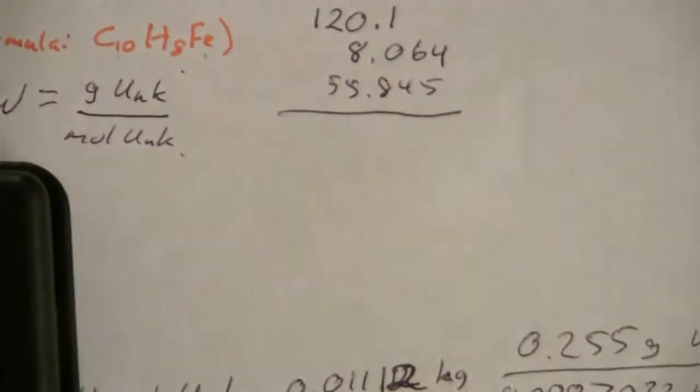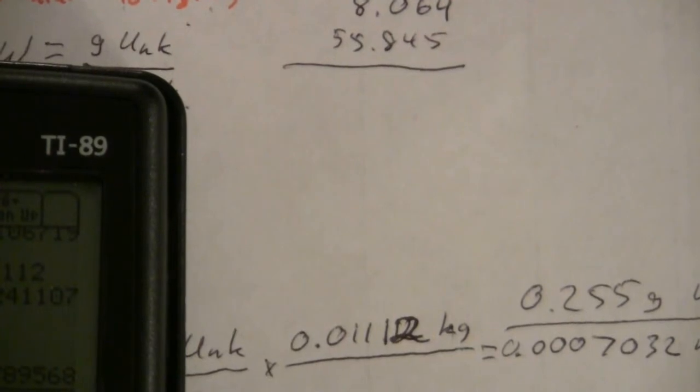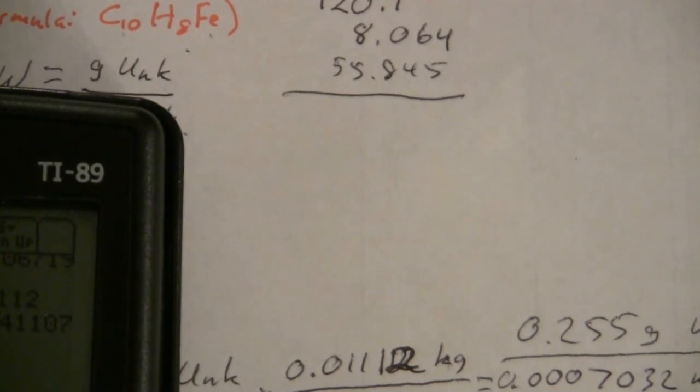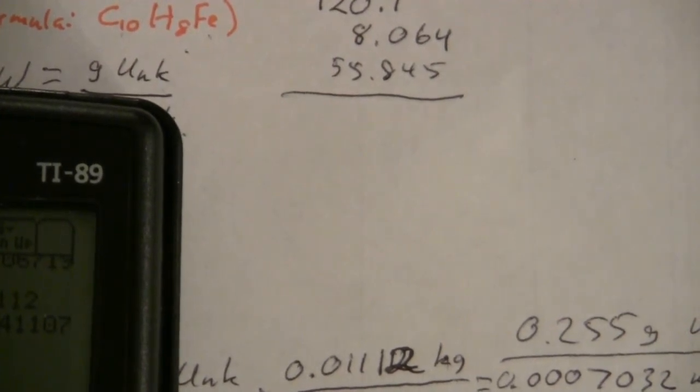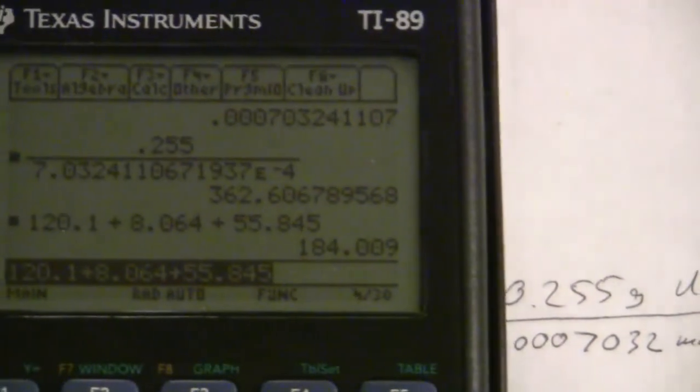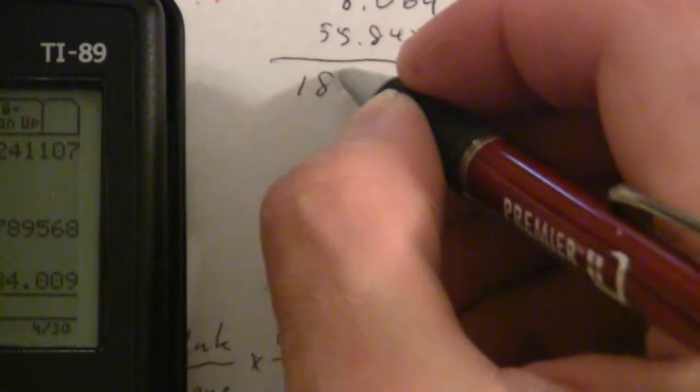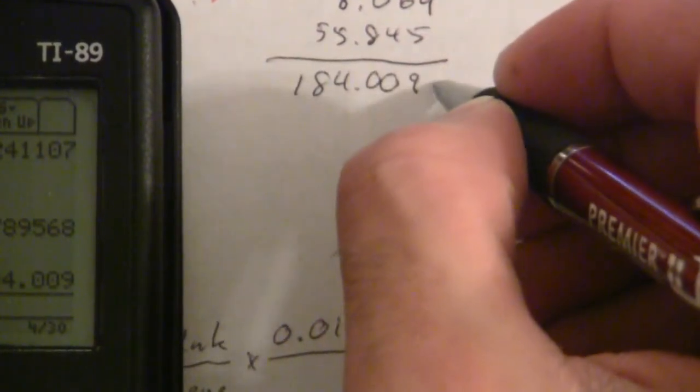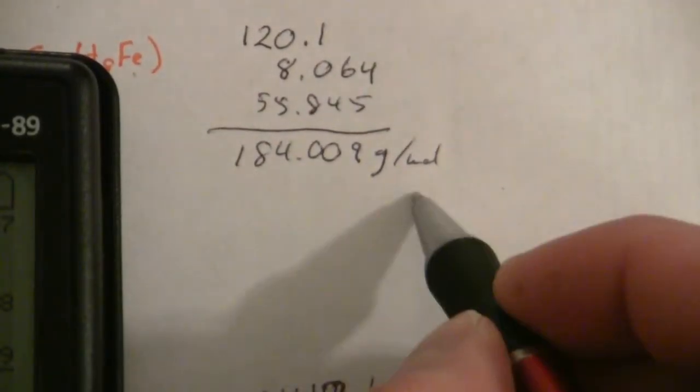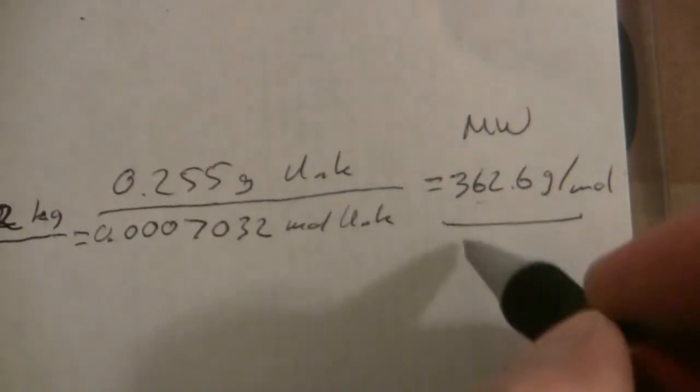If we add those together: 120.1 plus 8.064 plus 55.845, and what I end up with is 184.009 grams per mole. So my empirical formula mass is 184.009.